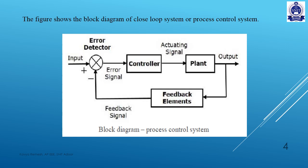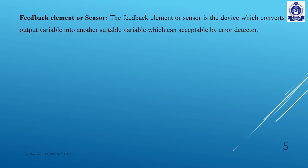Now, if you want to add a set point in the controller, you can see the set point. If you want to add a set point in the signal, you can see how many errors there are. You can see the error in the controller. I will show you the error in the actuating signal. If you want to add the output, you want to add a plant.